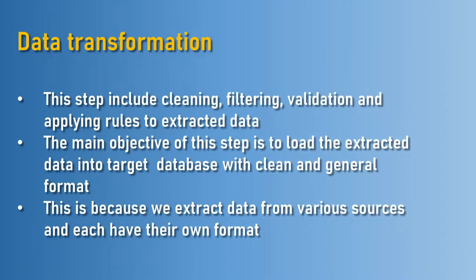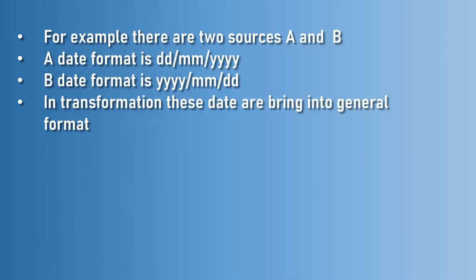After extraction, we have to save this data in a single file format. The transformation step includes cleaning, filtering, validating, and applying rules to extracted data. The main objective of this step is to load the extracted data into the targeted database in a clean and standard format, because various source systems have their own file formats. For example, source A may use date-month-year format, while source B uses year-month-date format — in transformation, these are brought into one standard format.